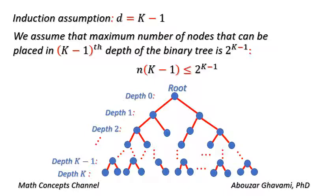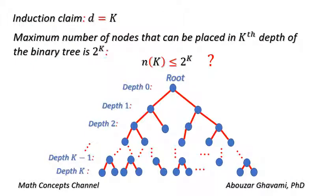We make the induction assumption: we assume that for D equals K minus one, N of K minus one is less than or equal to two to the power of K minus one. Now we prove the induction claim. We show that using the induction assumption and the hierarchical structure of the binary tree, N of K is less than or equal to two to the power of K.